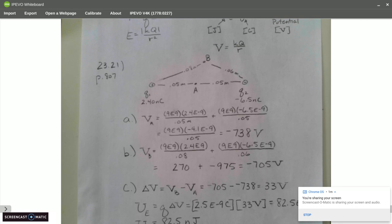So I set this up and I go k times q1 divided by the distance 0.05 plus k times q2 divided by 0.05. Please realize we do not use absolute values with electric potential. Put those together and double check me. I forgot my calculator at home. So I'm trying to use my smartphone. Not a good idea. It is negative 738 volts.